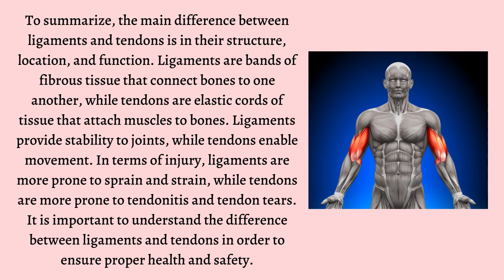To summarize, the main difference between ligaments and tendons is in their structure, location, and function. Ligaments are bands of fibrous tissue that connect bones to one another, while tendons are elastic cords of tissue that attach muscles to bones. Ligaments provide stability to joints, while tendons enable movement. In terms of injury, ligaments are more prone to sprains and strains, while tendons are more prone to tendinitis and tendon tears. It is important to understand the difference between ligaments and tendons in order to ensure proper health and safety.